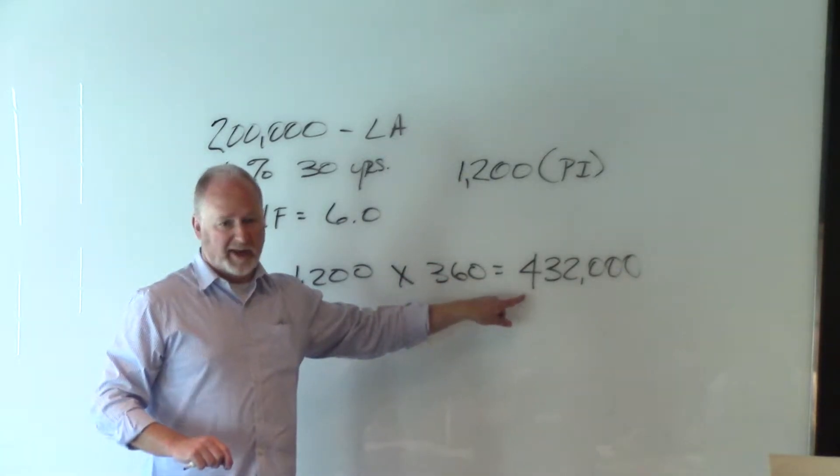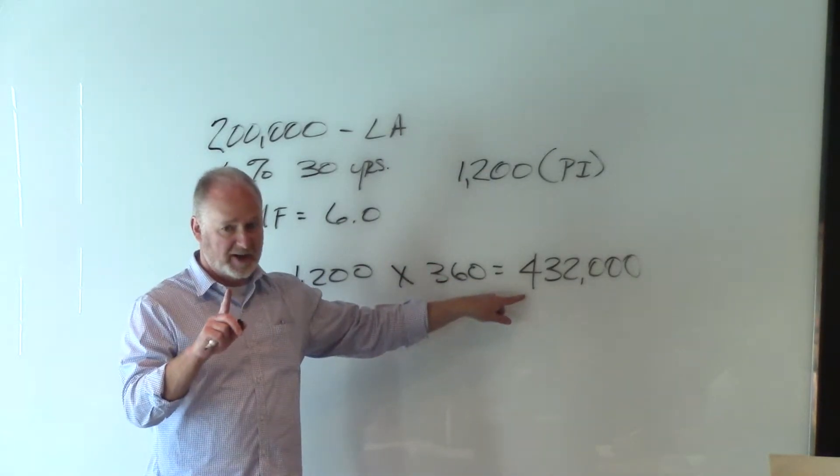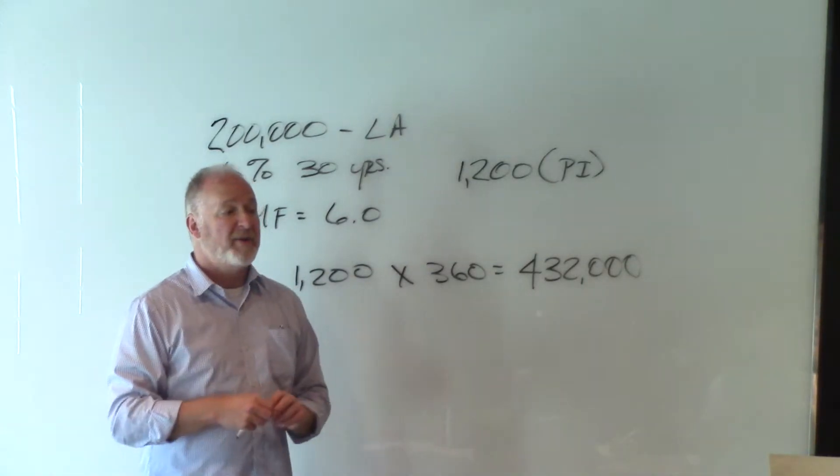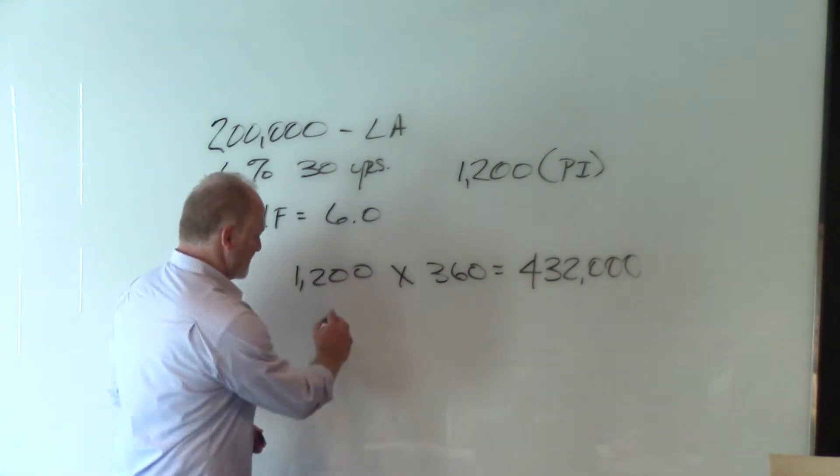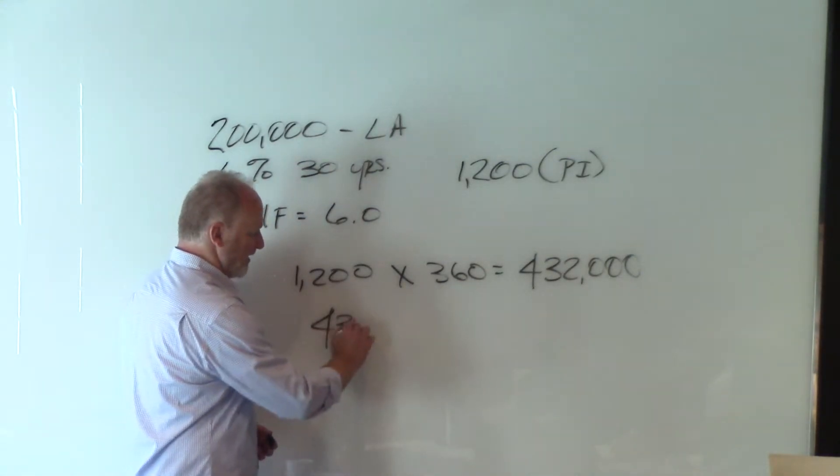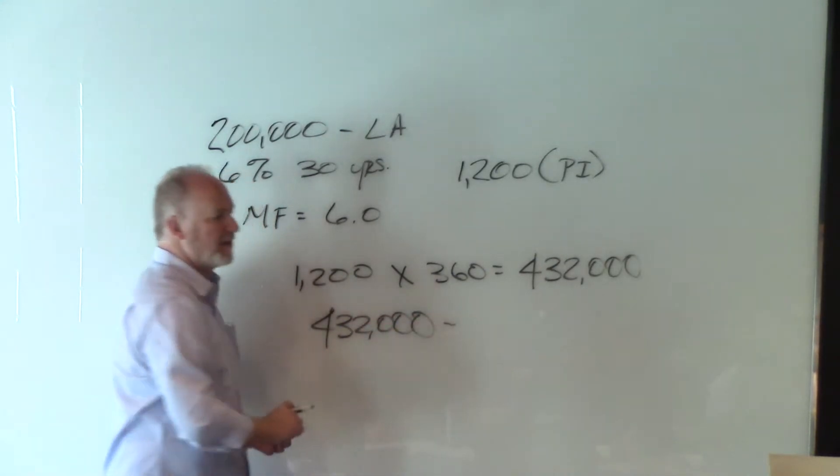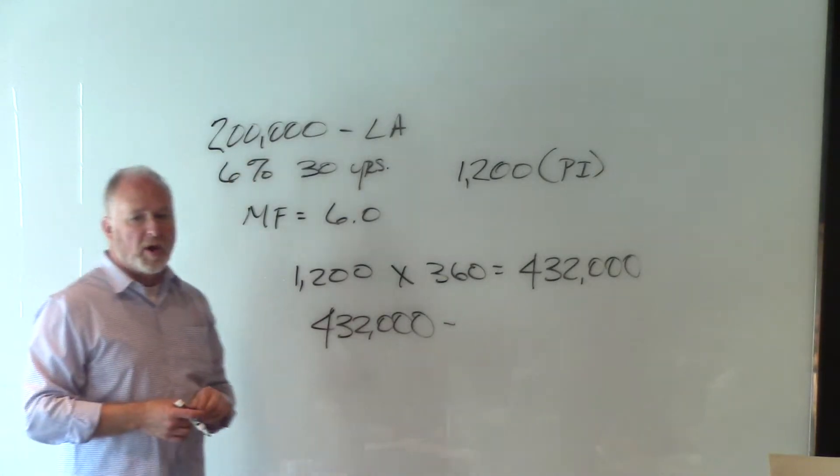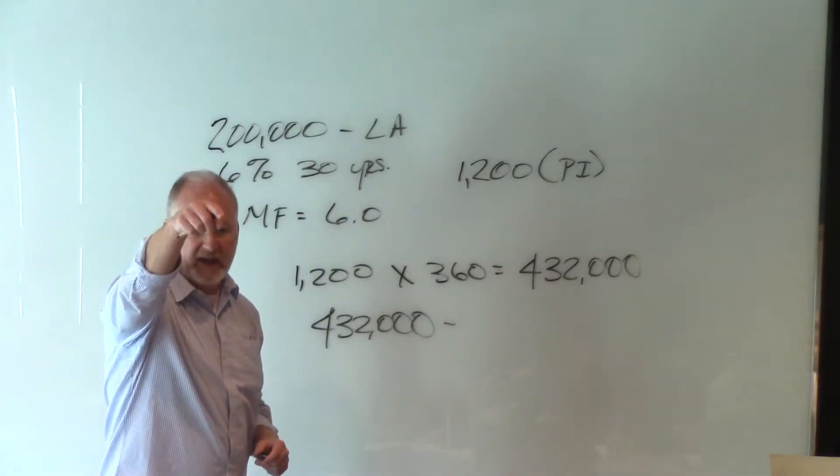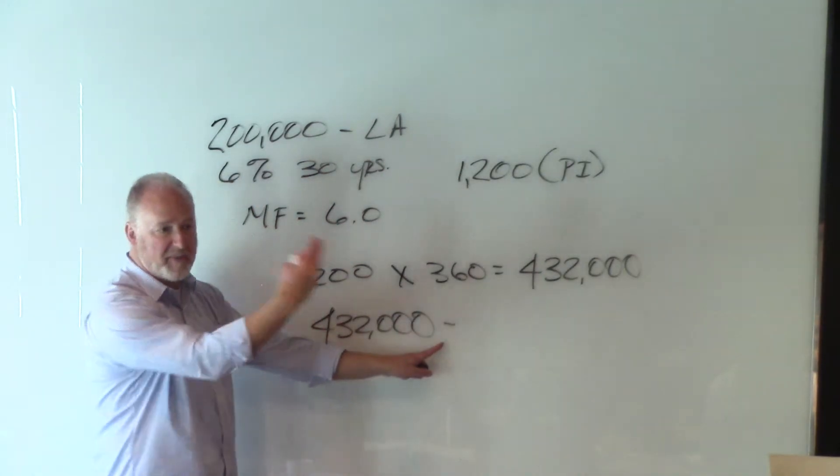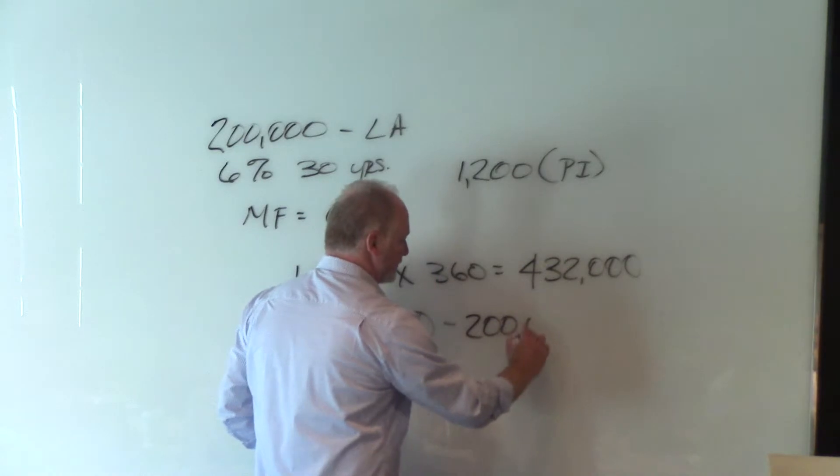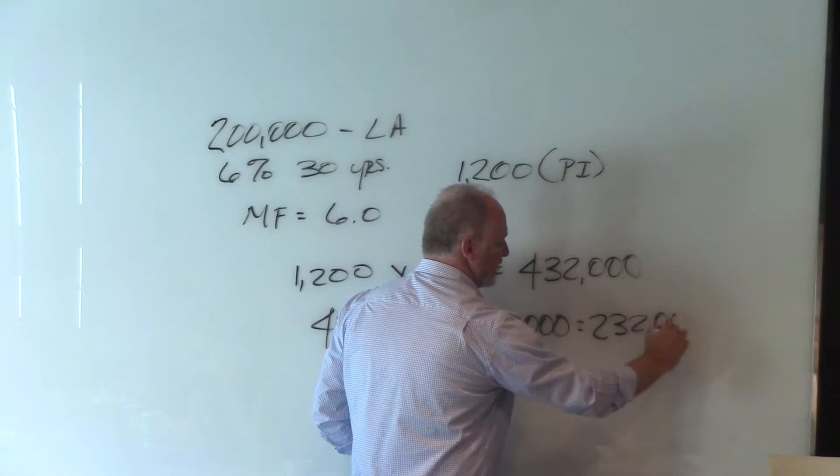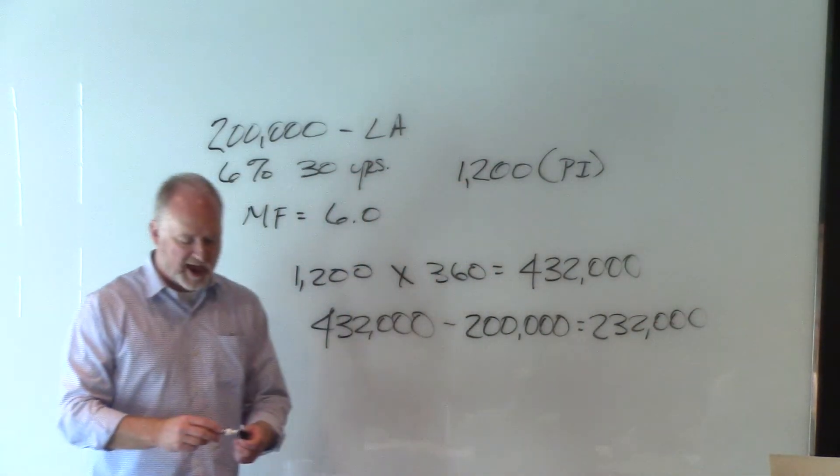Because that number right there includes not just the interest. It also includes what? That's the principal and interest you paid over the life of the loan, right? So to find out how much interest you paid over the life of the loan, take the total P and I and subtract what? Your original principal. And that's actually the rule. Whatever did not go to principal did go to interest, okay? So $432,000 in this case minus your original principal of $200,000 equals $232,000 interest over the life of the loan.